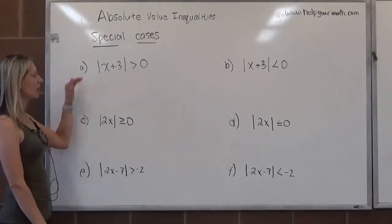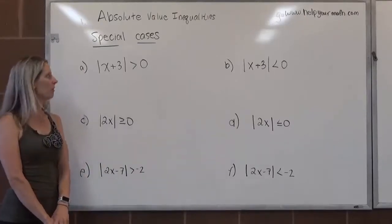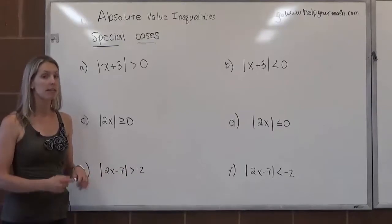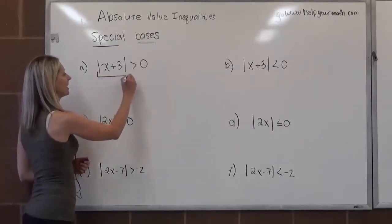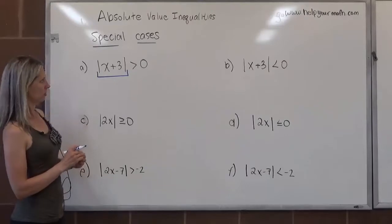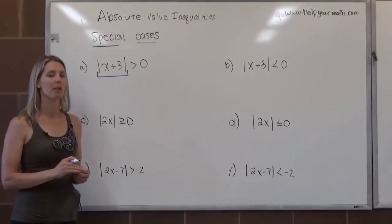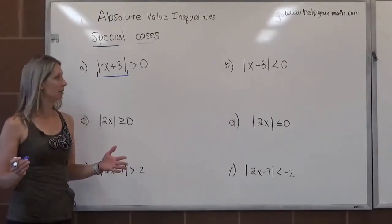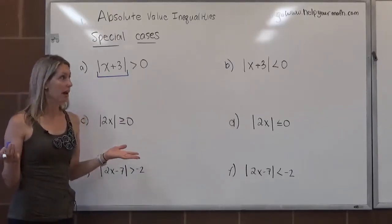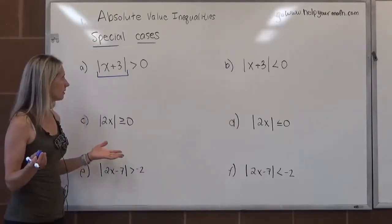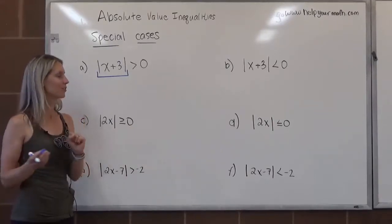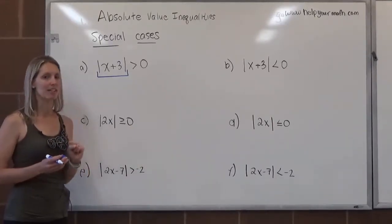Looking at letter A: the absolute value of x plus 3 is greater than 0. So let's think about what this is saying — when is this thing further away from 0 on a number line than 0 itself? This thing has to be bigger than 0. Well, that's like everything — it's almost always going to be bigger than 0. There's one case where it's not.